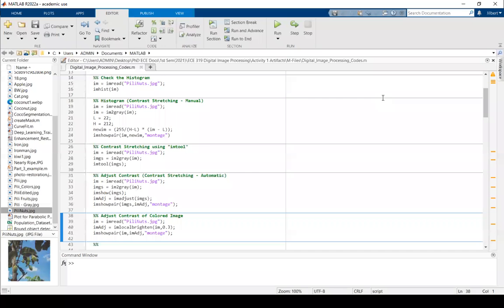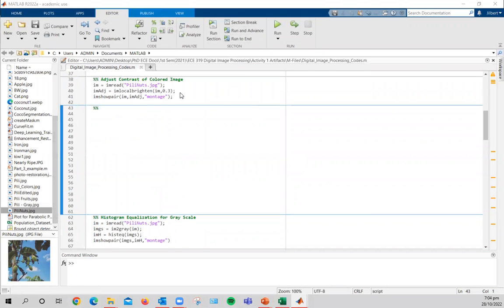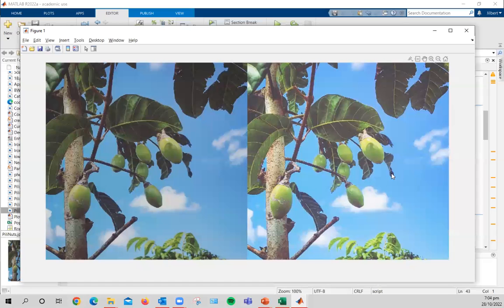So let's go back to MATLAB and show you the example. So IAM local brighten, and then the factor is 0.3. So let's run this code. And this is how it looks like. So a dimer original image. Now it's from the word itself, local brighten. So it brightens up the original image.